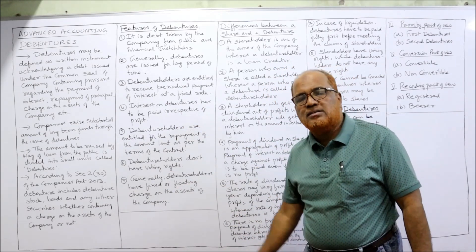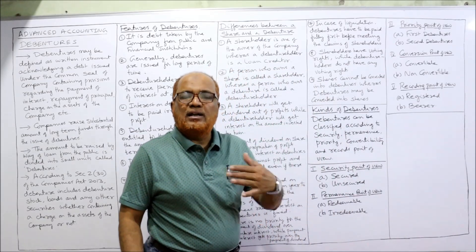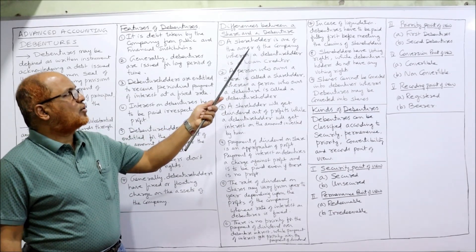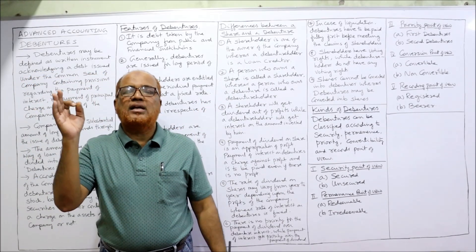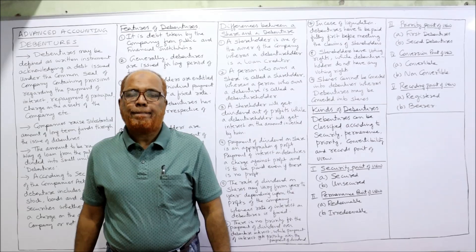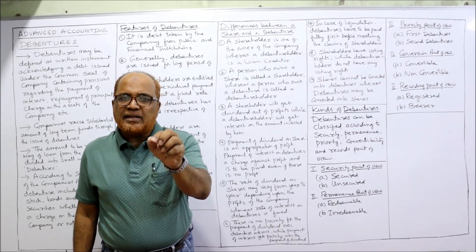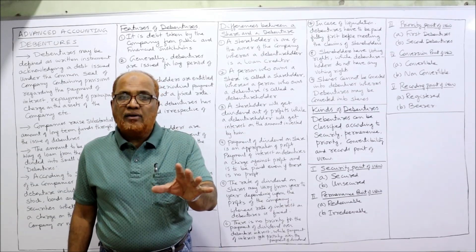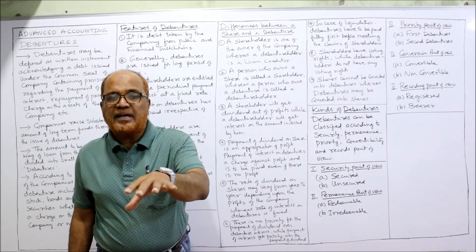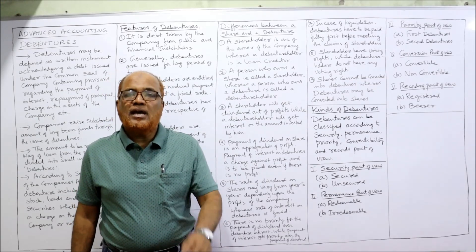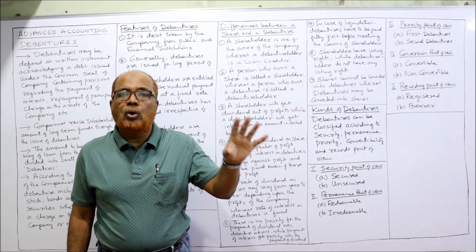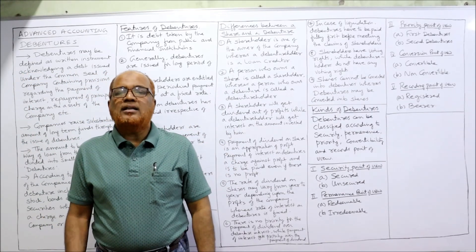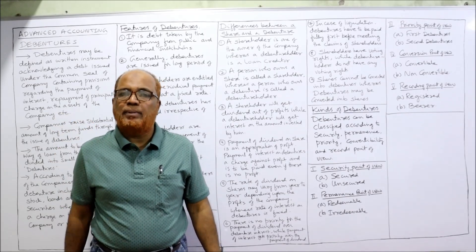Now, what are the differences between shares and debentures? The first difference: a shareholder is an owner of the company, whereas a debenture holder is a loan creditor. When a person purchases shares, he is the owner of the company. Whereas when a person purchases a debenture, he is a loan creditor — he has lent the money as a loan to the company. A person who owns a share is called a shareholder, and the person who owns a debenture is called a debenture holder.